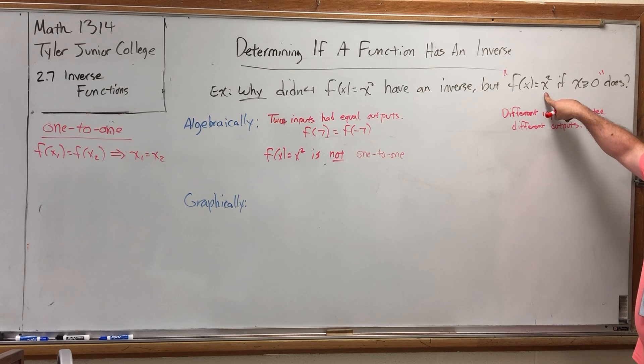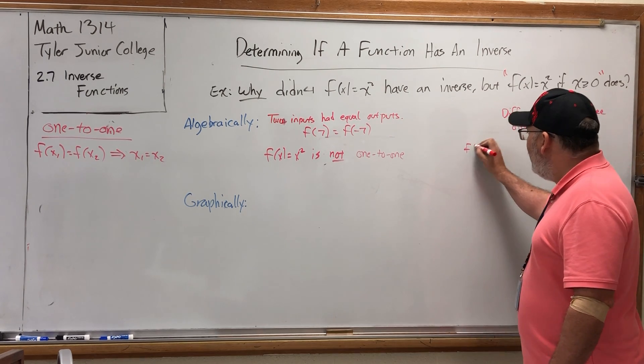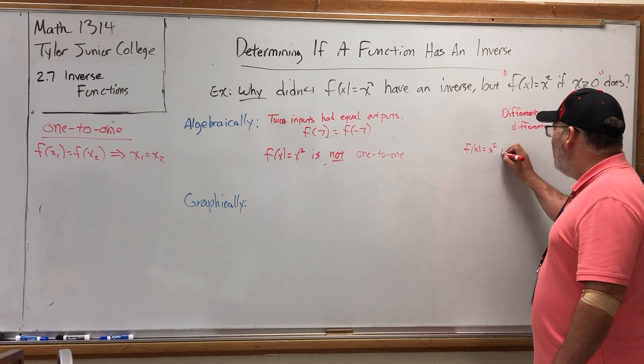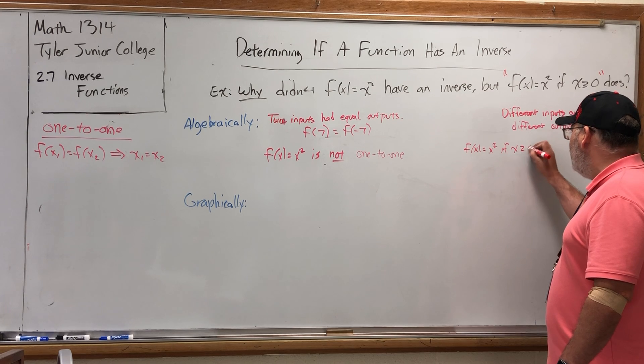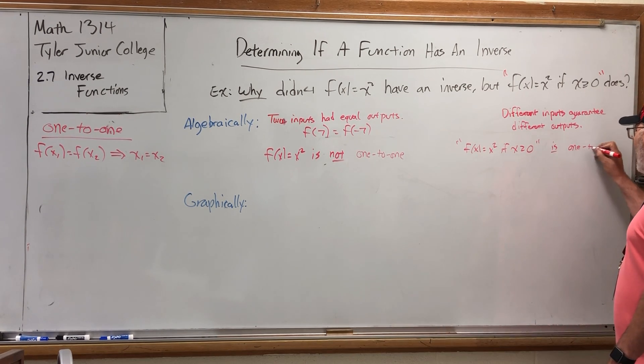Now, by contrast, this one will. There is only one number I can put in here to get 49, and that is 7. What about negative 7? I restricted it to the domain. There is no negative 7 over here. So this function, f of x equals x squared if x is greater than or equal to zero, is one-to-one.